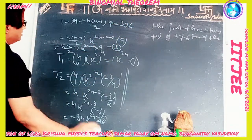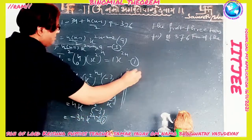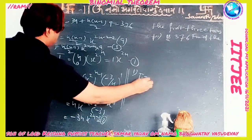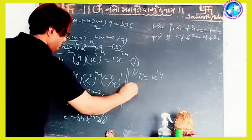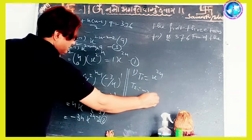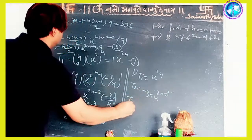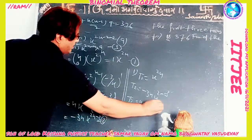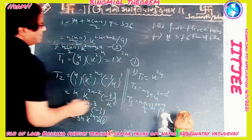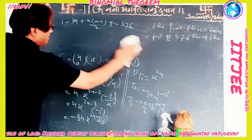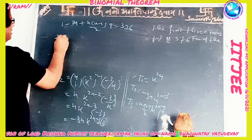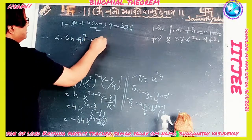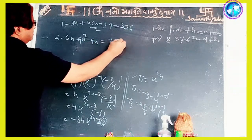Simplifying, we get 2 - 6n + 9n² - 9n = 752. That is, 9n² - 15n + 2 - 752 = 0, which gives 9n² - 15n - 750 = 0.